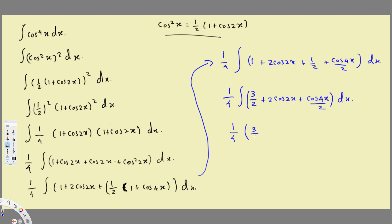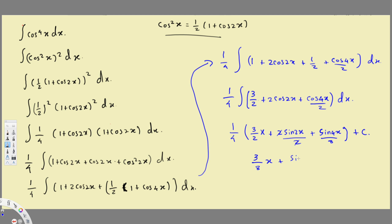Integrating term by term: the integral of 3 over 2 is 3 over 2 times x. The integral of 2 cos 2x is 2 sin 2x over 2. The integral of cos 4x over 2 is sin 4x over 8. Multiplying everything by the one over 4 out front: the first term becomes 3 over 8 x, the second becomes sin 2x over 4, and the last becomes sin 4x over 32, plus the constant of integration.